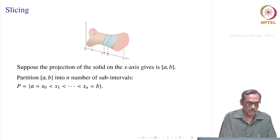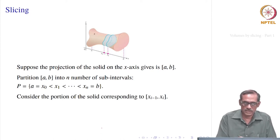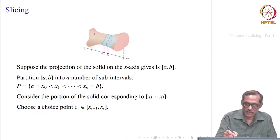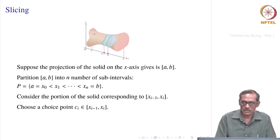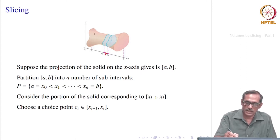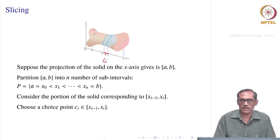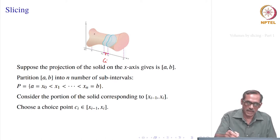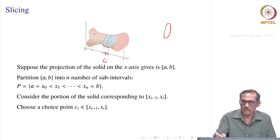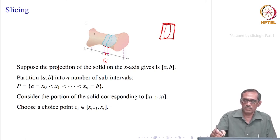In the sub-interval x_{i-1} to x_i, we choose a point c_i. The portion of the solid between x_{i-1} and x_i is approximated by the cross-sectional area at c_i times the length x_i minus x_{i-1}. This is like a cylindrical approximation — instead of taking the exact volume, we take the area at c_i times this length. This works provided we know how to find the cross-sectional area at x equal to c_i.